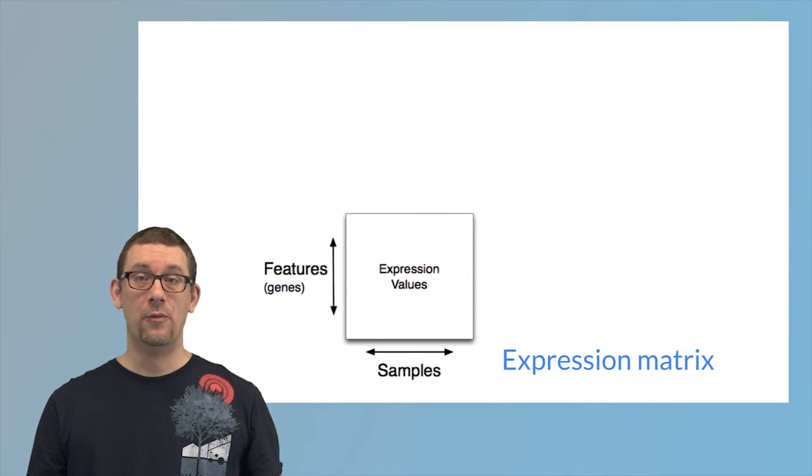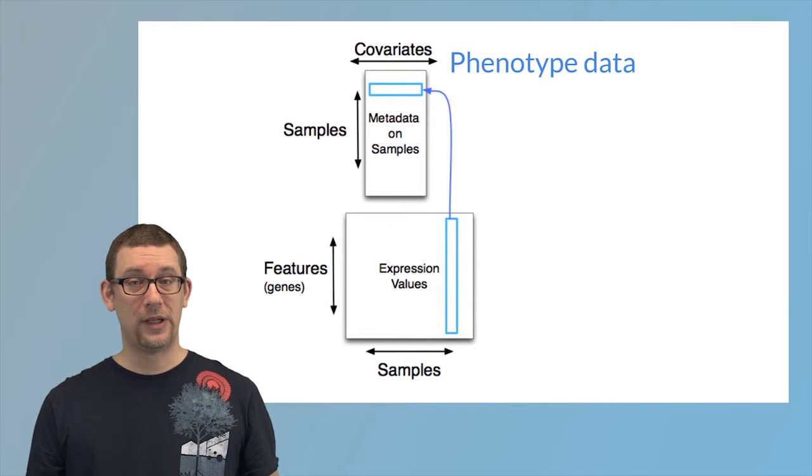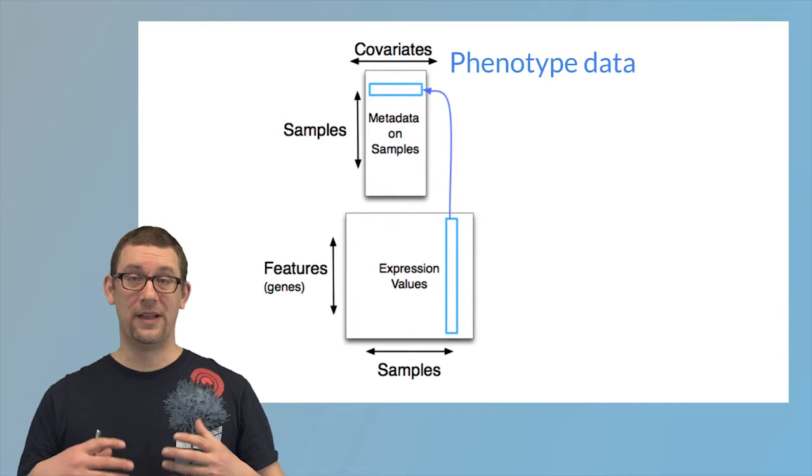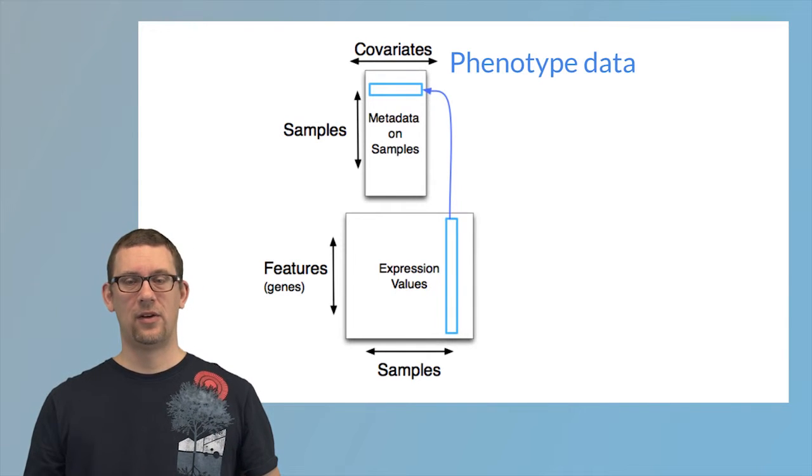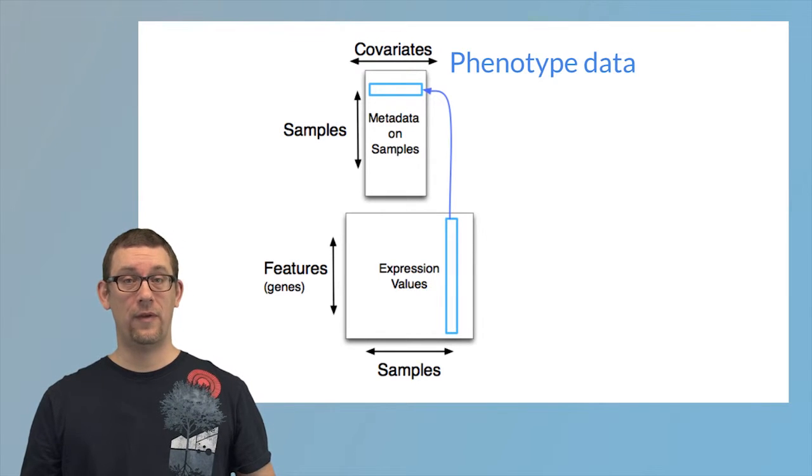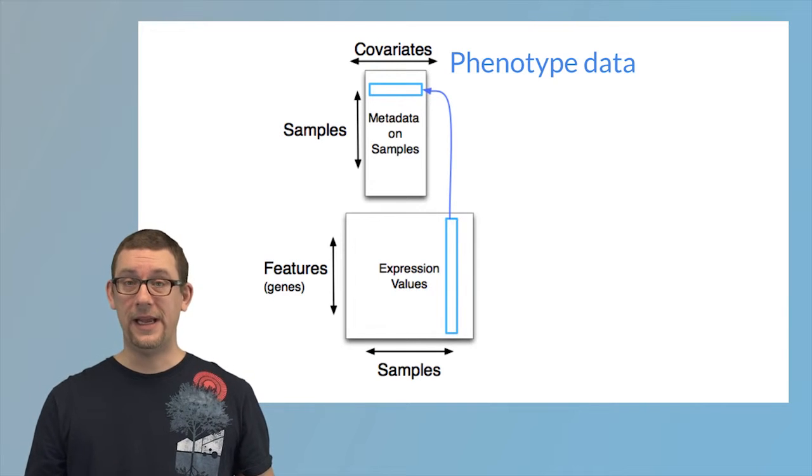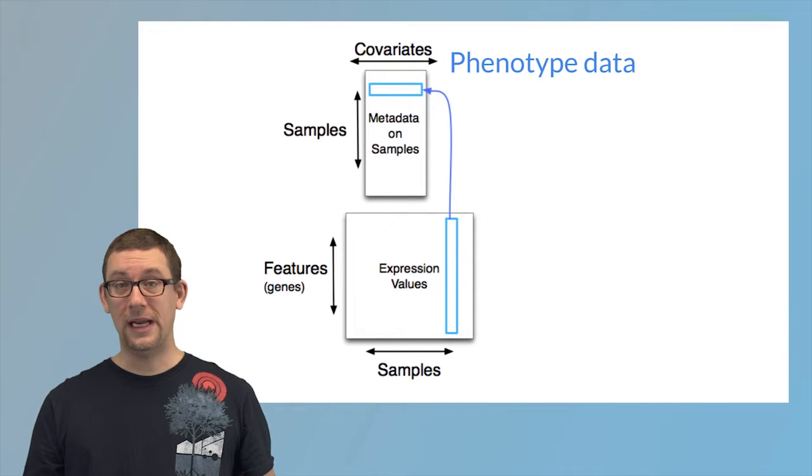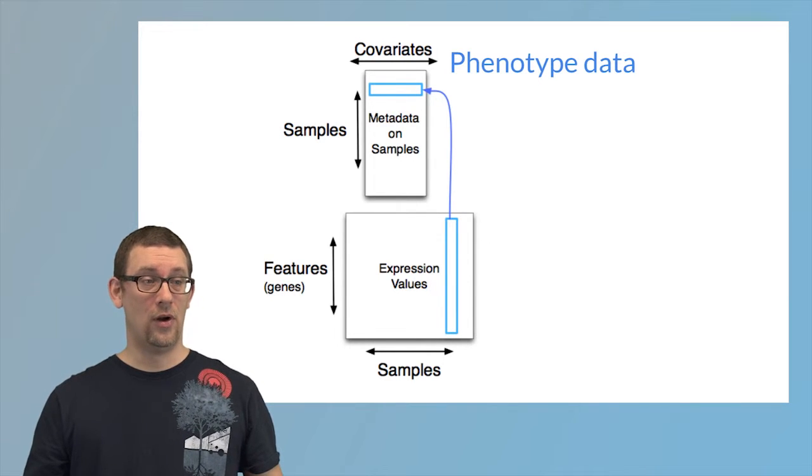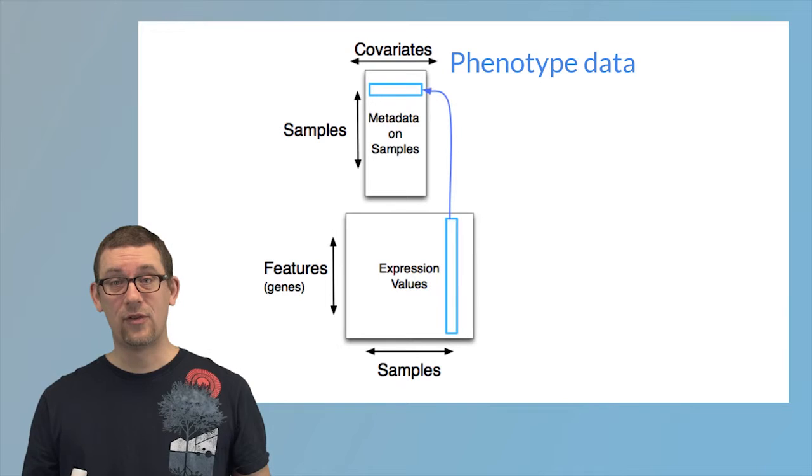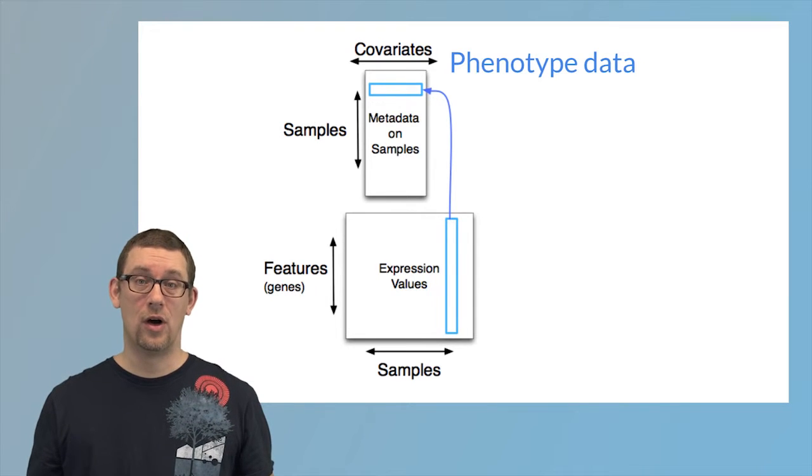Together with the expression data, we need additional information or metadata on the samples. That is represented in the context of a different matrix or a data frame in R, where each row of this matrix corresponds to a sample and each column corresponds to a different covariate. Examples of covariates could be sample sex, it could be sample age, it could be time of the experiment or date of the experiment, and other information on the individual samples. These two matrices, or a matrix and a data frame, are linked together in the sense that one row of the phenotype data corresponds to one column of the expression matrix.